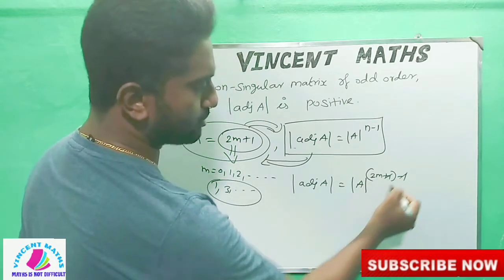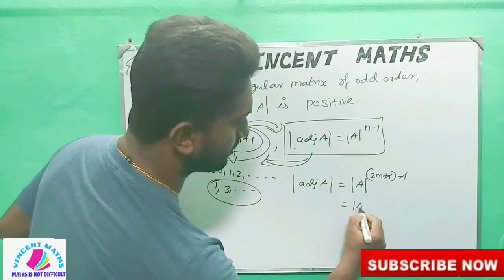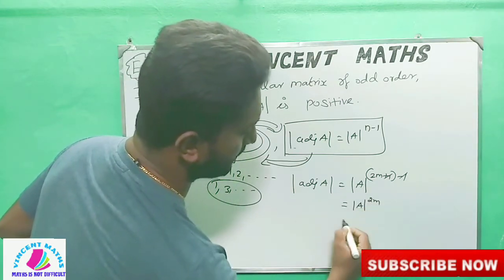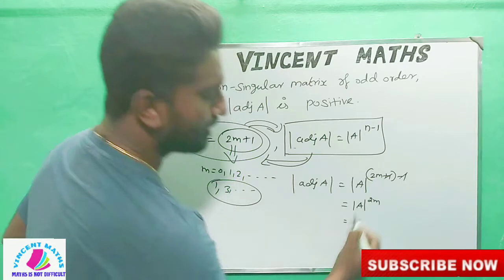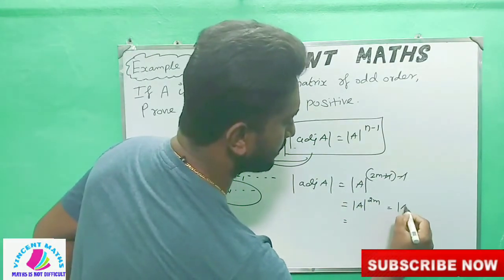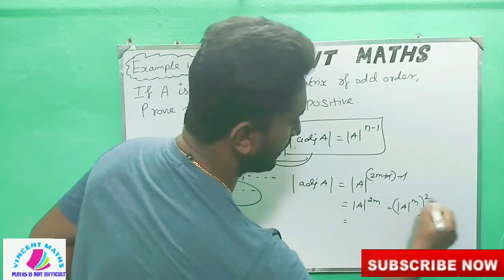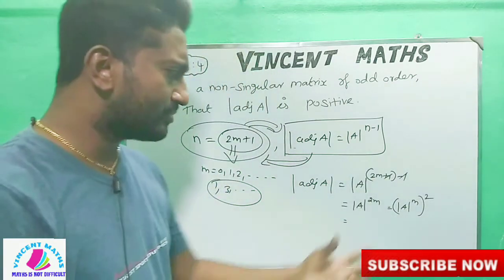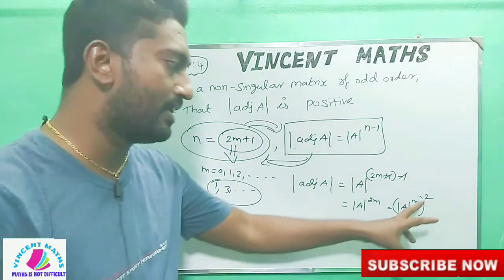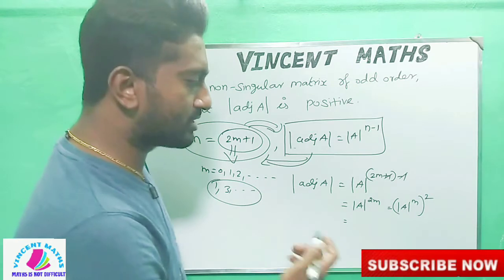Then we can substitute this formula. The determinant of A equal to A power n — value here is 2m plus 1 minus 1. Then the plus 1 and minus 1 will cancel. Then we need to meet the determinant of A power 2m. What we're doing is determining A power n holds required. Then what is negative number and what is positive number?